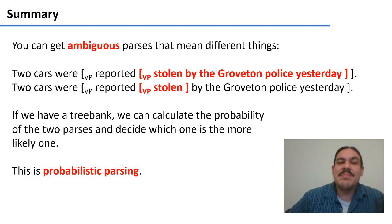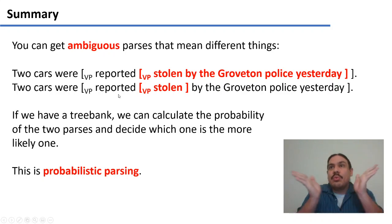In summary, you can get ambiguous parses from a single sentence. One sentence can be parsed in more than one way. For example, two cars were reported stolen by the police yesterday. In this one, they were stolen by the police, and in this one, they were reported by the police. Because there's ambiguity, we don't know which one is the more preferable parse. If we have a tree bank, we can calculate the probability of the parses and try to decide that one makes more sense than the other. And we call this probabilistic parsing.